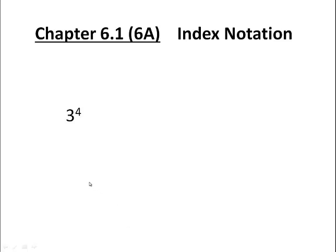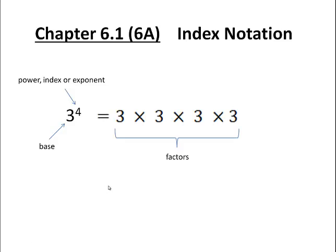Index notation is about writing numbers to powers, for example 3 to the power 4. There are two key parts to this symbol: the 3 is the base, and the 4 is called the power, index, or exponent. The power 4 tells us how many times the 3 must be multiplied by itself — in this case 4 times — and 3 times 3 times 3 times 3 are said to be the factors. If we evaluate this, we get the answer 81, which is an integer or whole number.